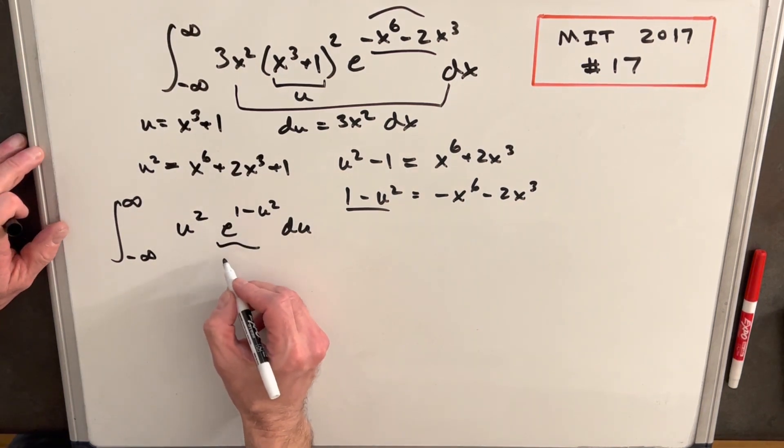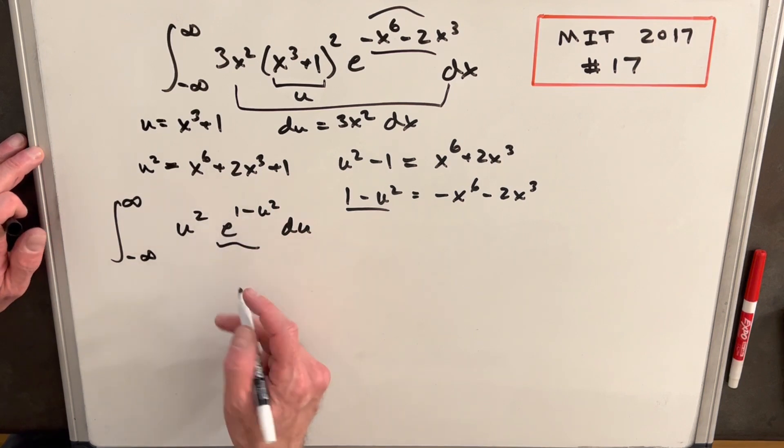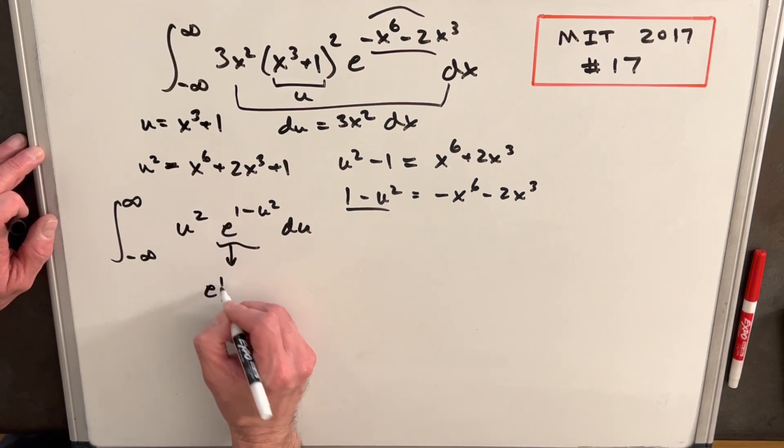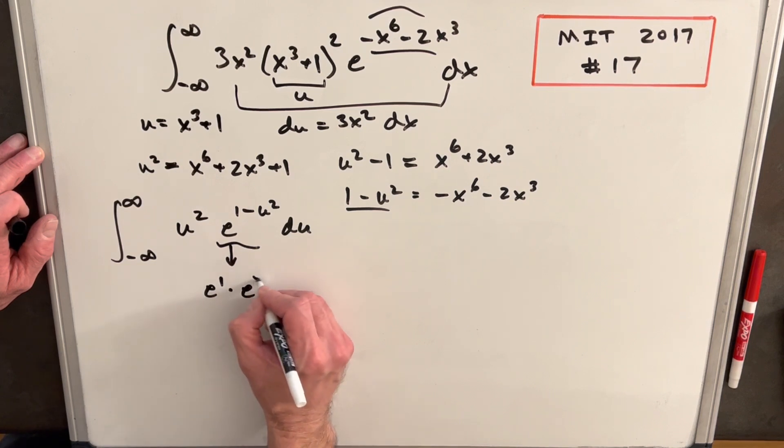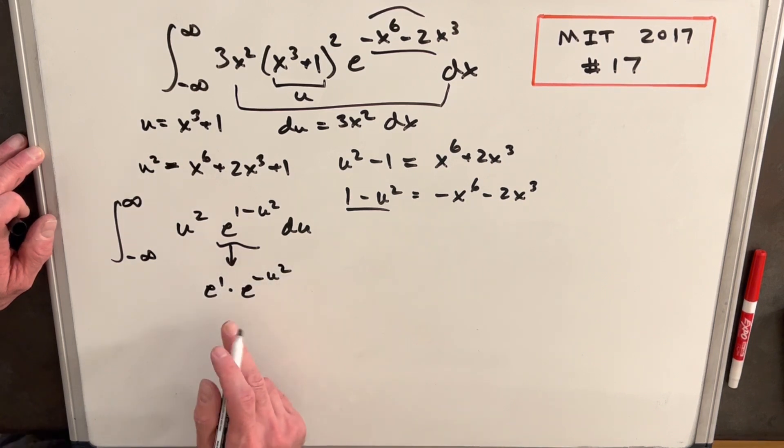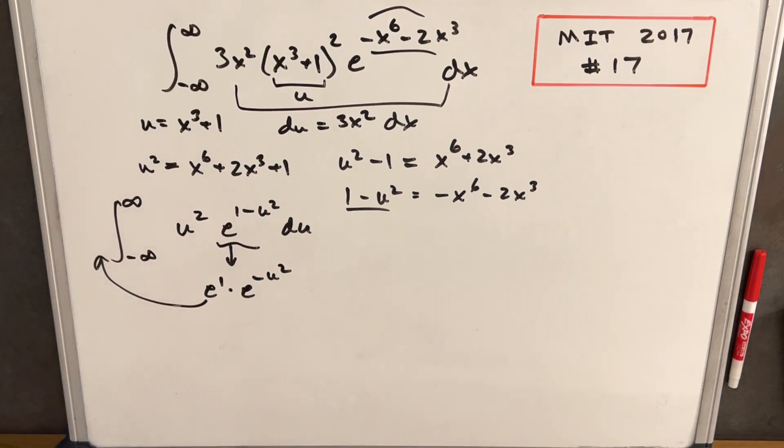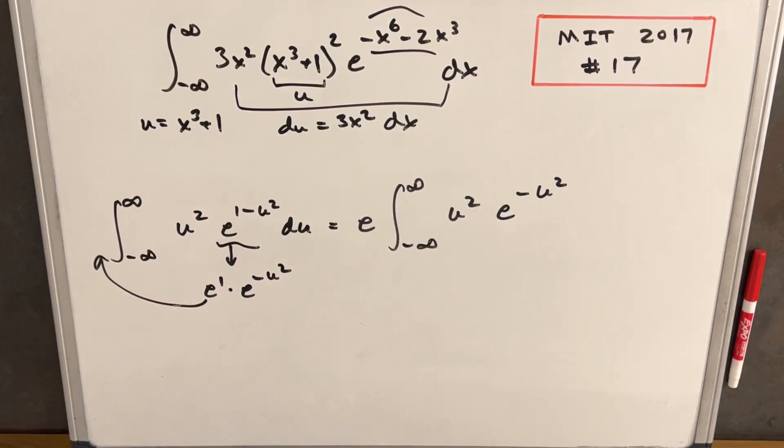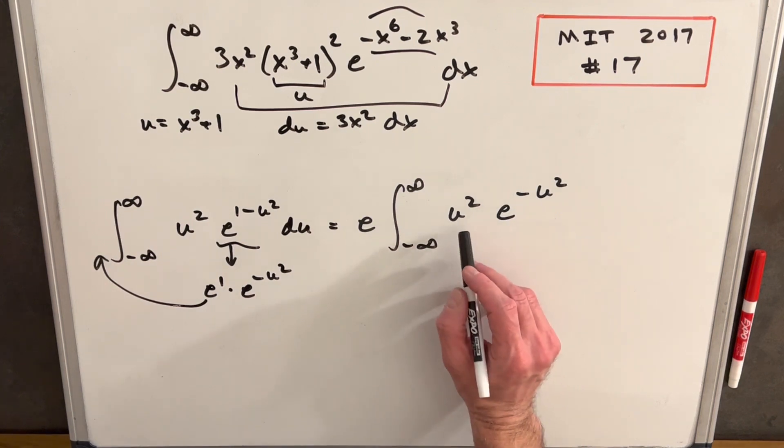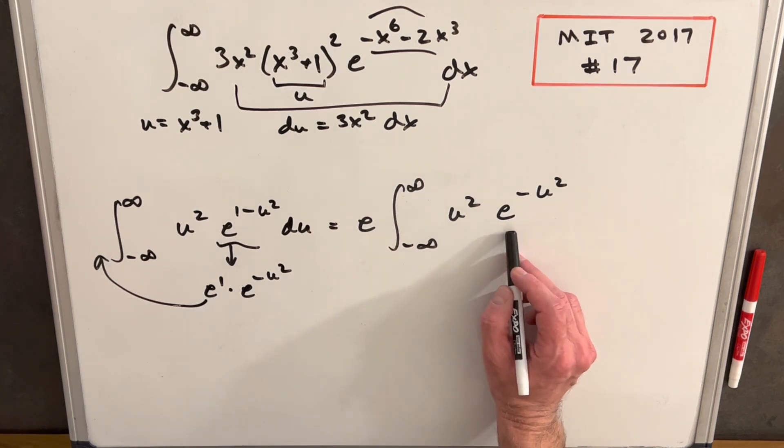Then what I'm gonna do is we're gonna take our exponential here. When we have addition or subtraction, we can write this like multiplication. So we can write this thing like e to the 1 times e to the minus u squared. And then e is just a constant value. So we'll bring that outside of the integral. And then rewriting it, now we've got something fairly simple, although maybe hard to deal with. We have just u squared e to the minus u squared.